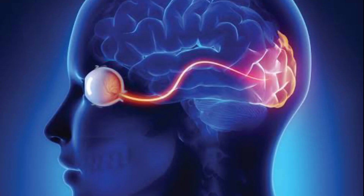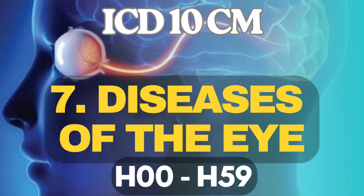This video is about the Eye and Adnexa. We don't have the entire guideline for this chapter because many codes are directly usable. Based on the documentation, you can select codes directly without any specific guidelines — you just have to follow the footnotes, the excludes and includes notes below the diagnosis. In this chapter, we have only two types of guidelines: one for Glaucoma and the other for Blindness or Low Vision.